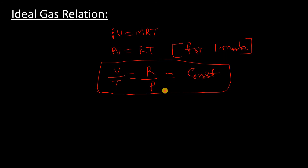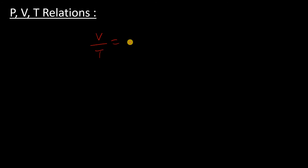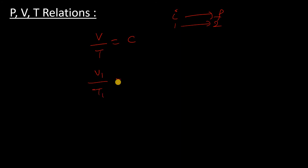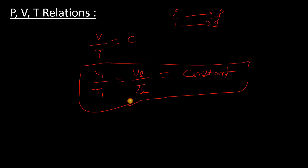Now we will see the PVT relation for the isobaric process. We have V/T = constant. Going from the initial state to the final state (state 1 to state 2), the formula is: V1/T1 = V2/T2 = constant. This is a very useful formula when solving thermodynamics problems.